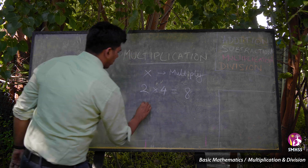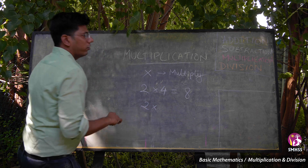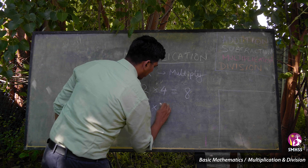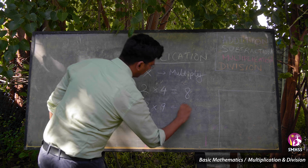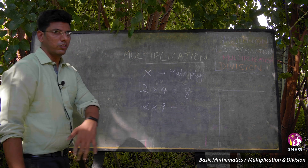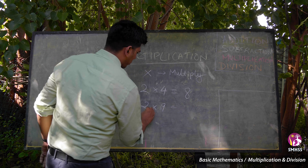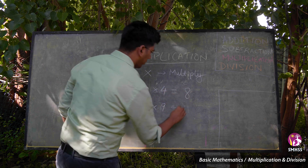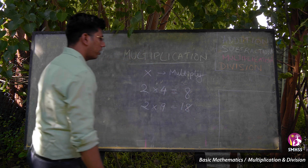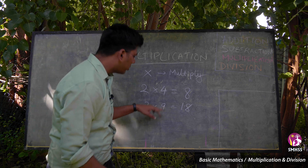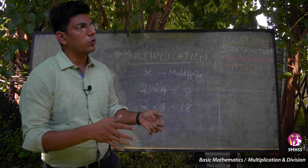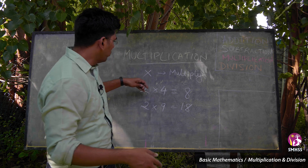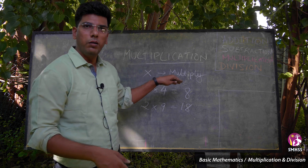Suppose what if you have to fill 9 plates? So this will be 2 into 9, which is 18 — 2 nines are 18. This is the concept of mathematics. When you have to do repeated additions again and again, you can use this symbol and multiply it.